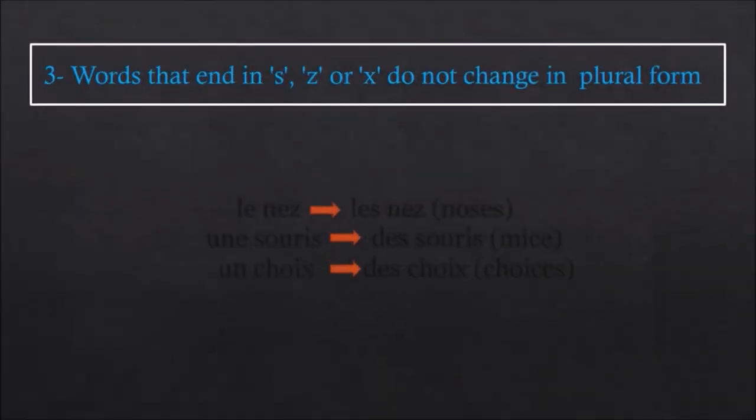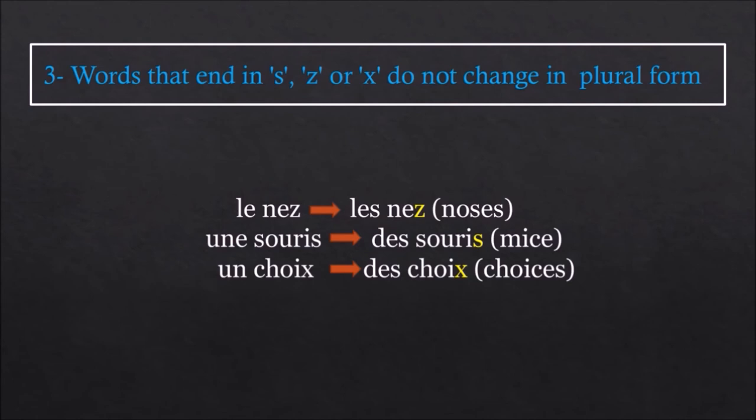Now, words that end in S, Z, or X do not change in plural form. For example, le nez, les nez. Une souris, des souris. Un choix, des choix.